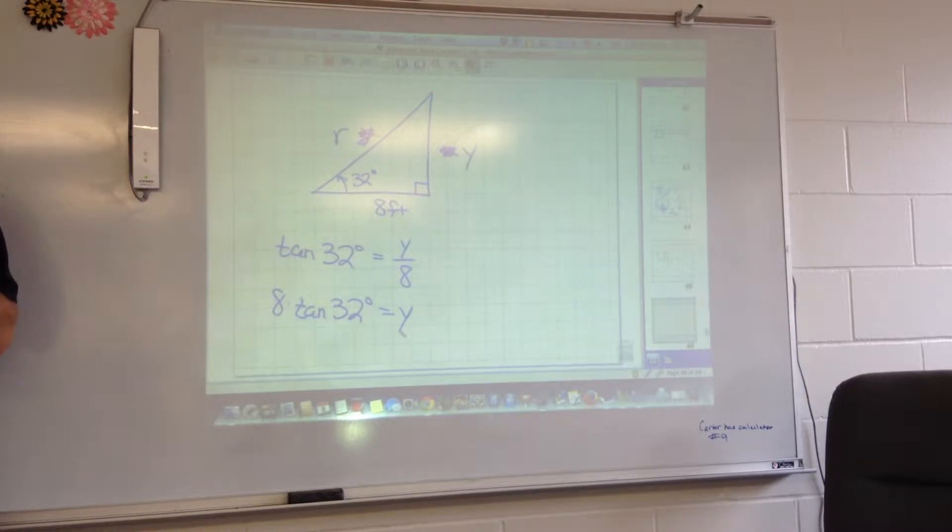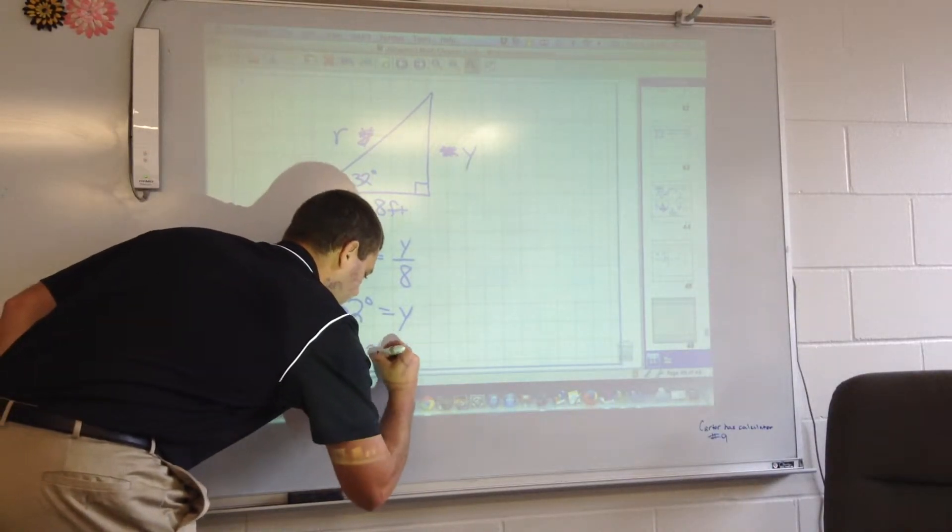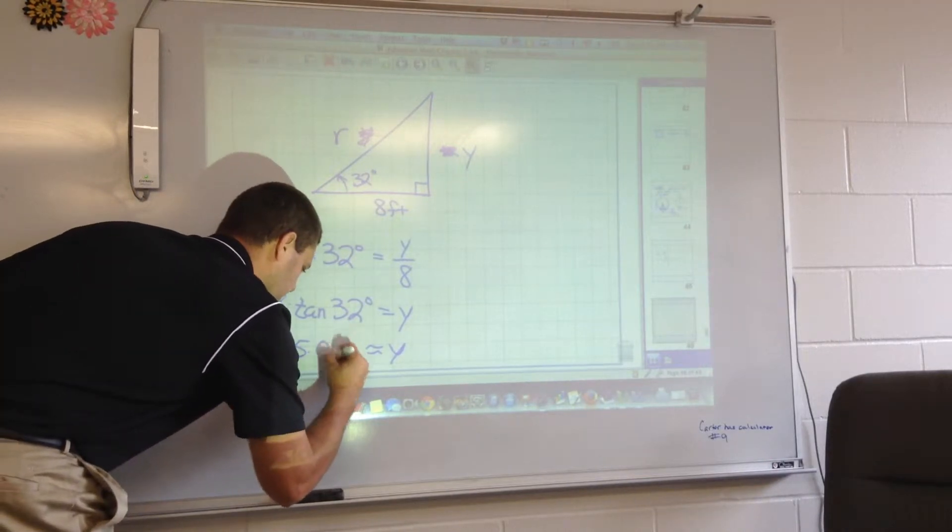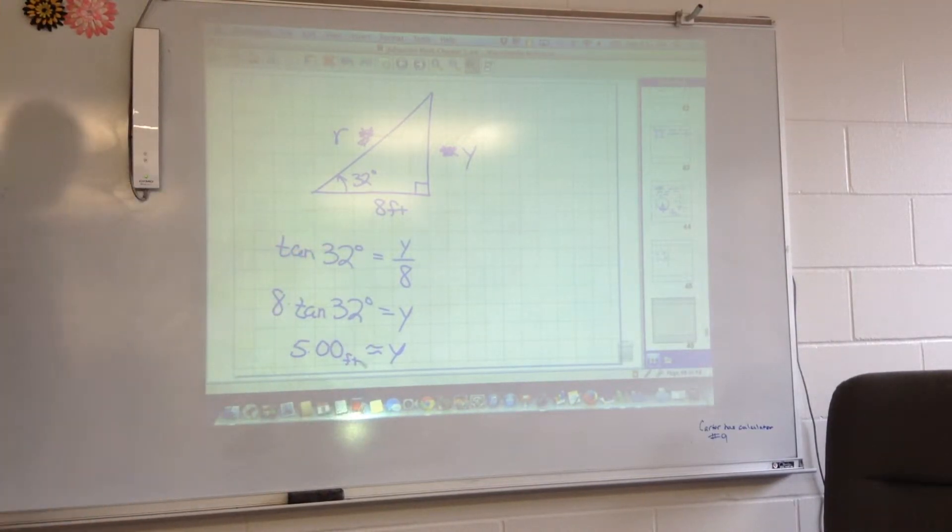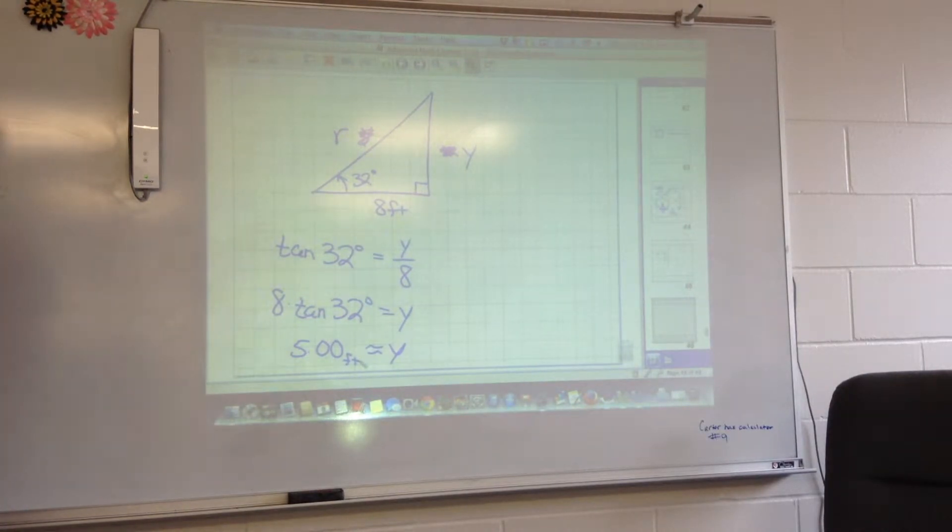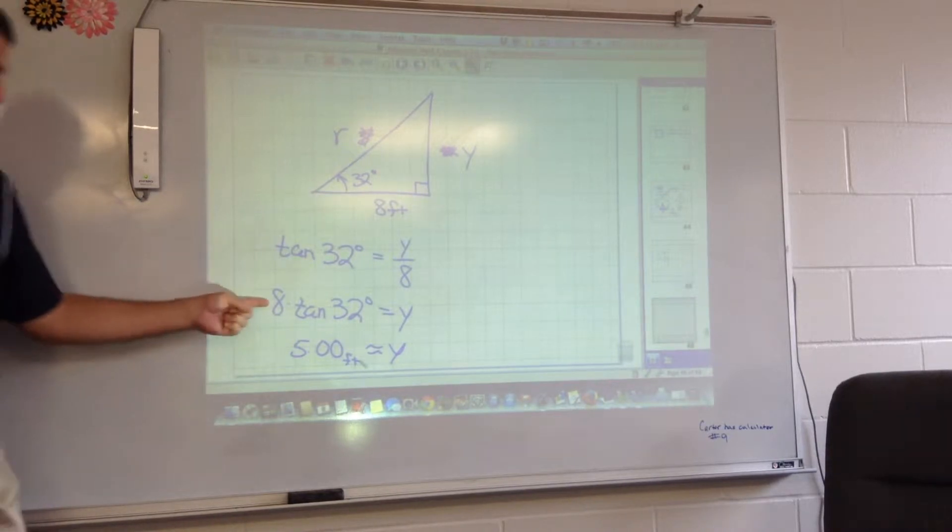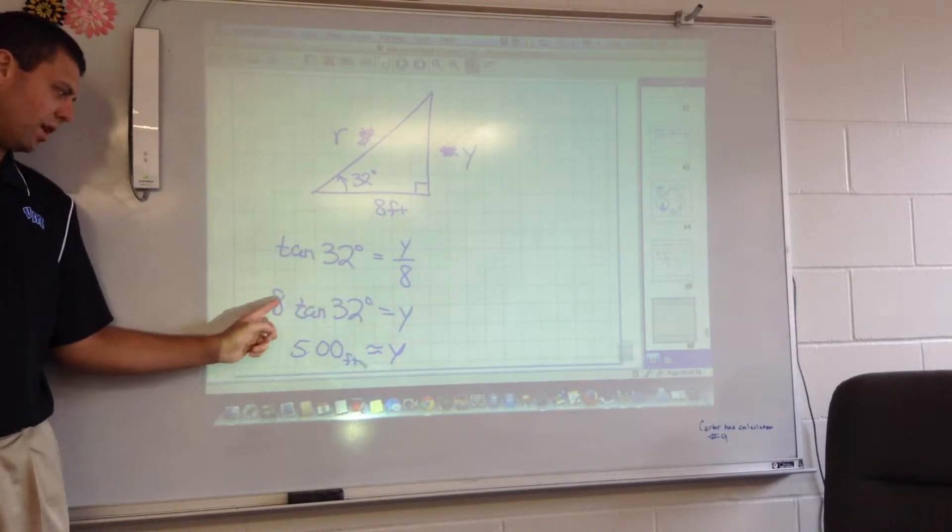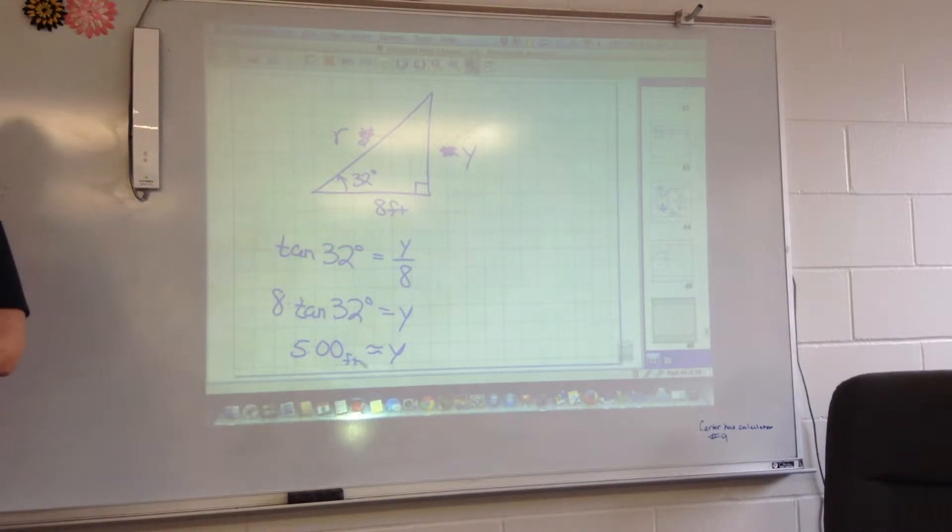Mode is located right up by your second button. If you hit mode, one of the choices is degrees or radians. You want to make sure you're in degree mode for right now since we're working in degrees. If you take 8 times the tangent of 32 degrees, you should get 4.998. So let's go 2 decimal places. I know that's usually what I ask for. So Y is about 5.00 feet.